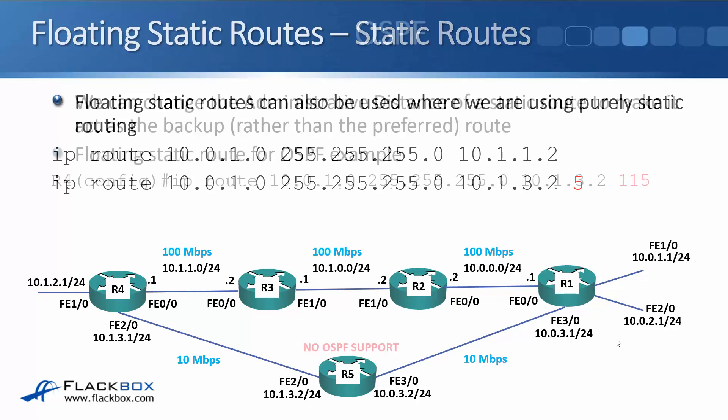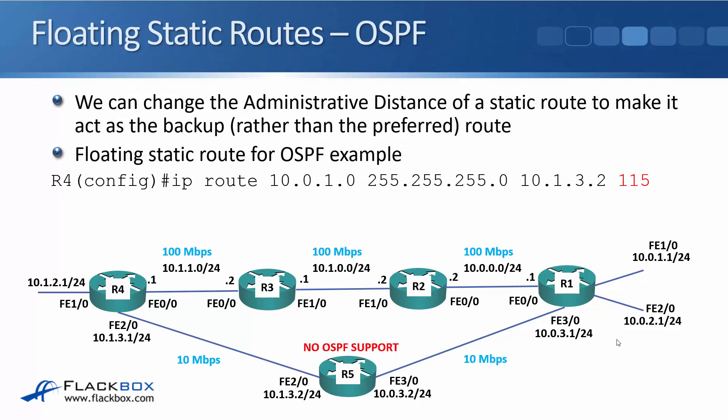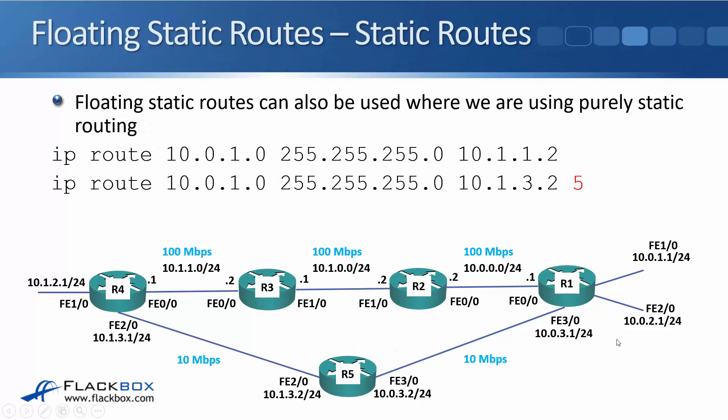A word of warning: if you use a floating static route as a backup for OSPF and any of the links from R4 to R1 go down, OSPF will detect that and the route will be removed from the routing table — so that works fine. But with static-routes-only, this works if the link from R4 to R3 goes down because R4 will detect that. However, if the link from R3 to R2 or R2 to R1 goes down, R4 won't know and will continue sending traffic along the broken path, which will only get as far as the broken link and then fail. So be careful if you have other routers along the path.